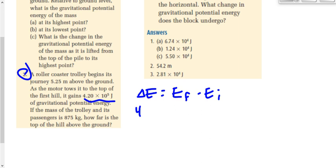My change in energy is 4.20 times 10 to the 5 joules. My final energy is MGH_F, final potential MGH final, minus the initial potential energy. Okay, what's the initial potential energy? Well, it's MGH initial, right? But what's MGH initial? Well, let's sub in some numbers for that.